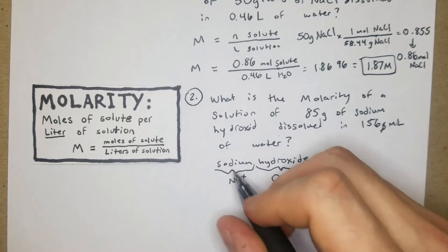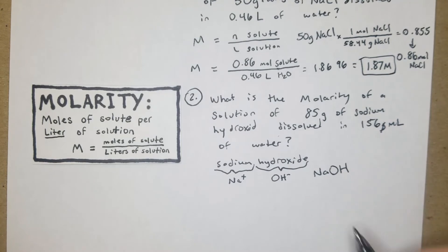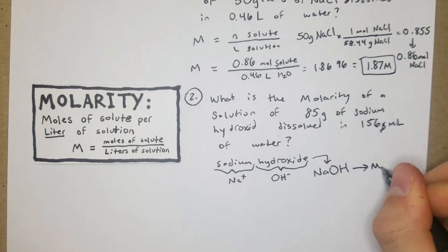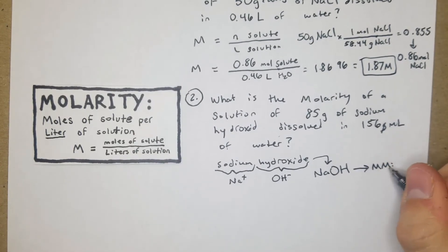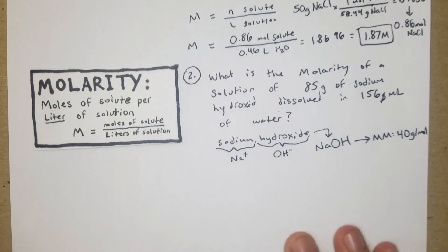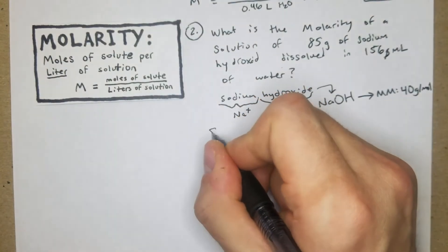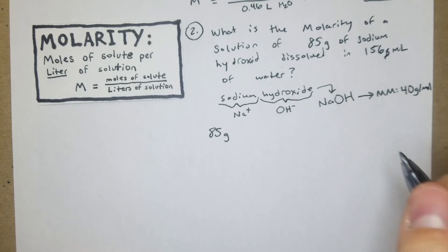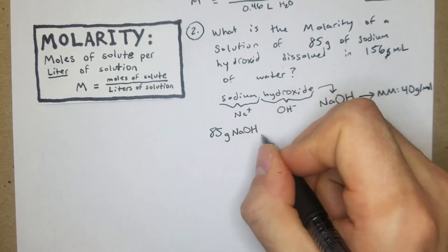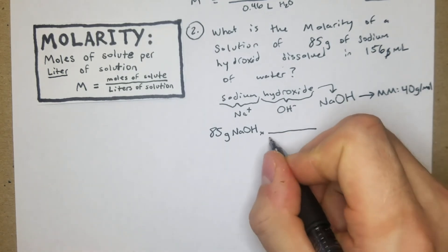From there you need the molar mass again - that's something I pre-calculated. We have 40 grams per mole. Now we're going to go forward with that. We have 40 grams per mole and we have 85 grams. So 85 grams of NaOH, and we need moles if we're going to use that formula. The molar mass we have on the bottom: 40 grams NaOH per one mole NaOH.